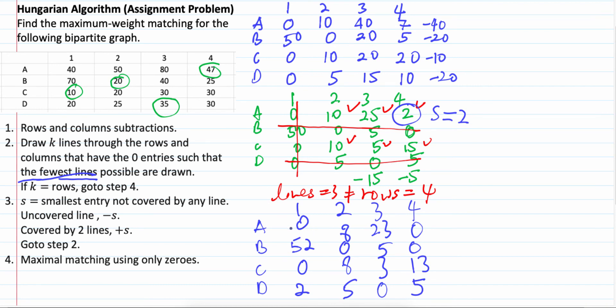So, now we have exactly 4 lines equal to 4, equal to number of rows.